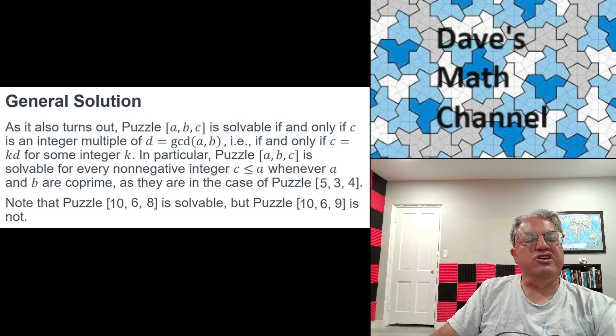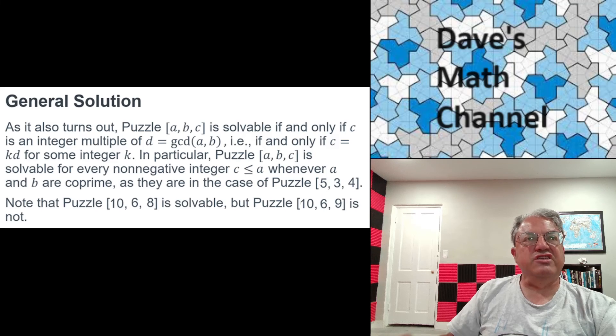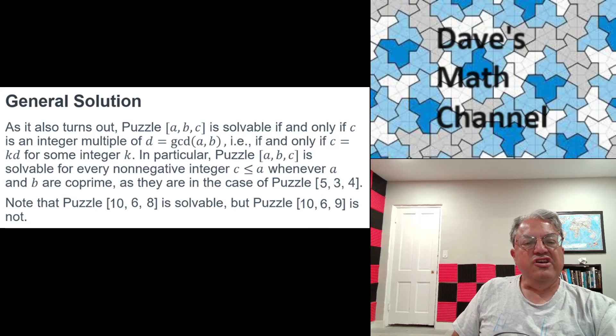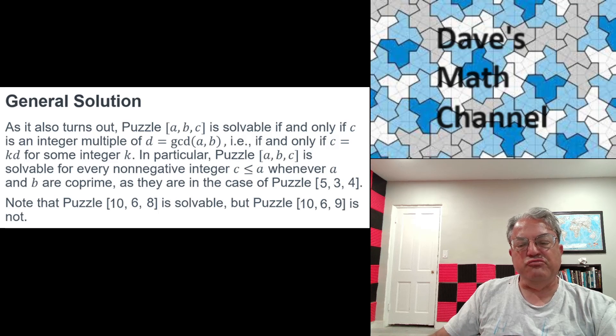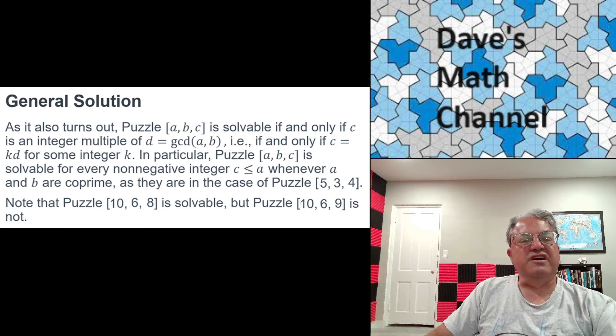But there are cases that are unsolvable. For instance, suppose your jugs were 10 liters and 6 liters. Well, those have a gcd of 2. So that means you can measure out 8 liters, because 8 is a multiple of 2, but you can't measure out 9 liters. So if the bad guys had started with a 10-liter and 6-liter jug and asked Bruce Willis to measure out exactly 9 liters of water, he'd be dead. Because that's unsolvable.